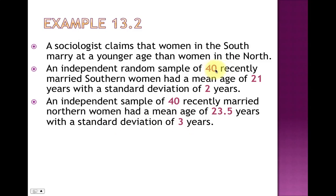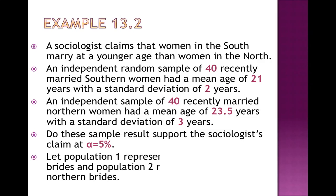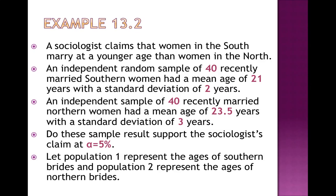We need the sample information from the two different populations — South and North. We use an alpha of 5%, and like in previous hypothesis tests, we're going to take our p-value, compare it to alpha, and that's how we'll come to a conclusion. Population 1 will represent the ages of Southern brides, and population 2 will represent the ages of Northern brides.